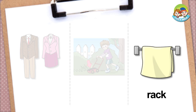Rack. A rack is a frame, usually with bars. We use a rack to hang things on. When we dry clothing, we hang it on a rack. We also hang clothing on a rack to store it. In the picture, a towel is hung on a rack.